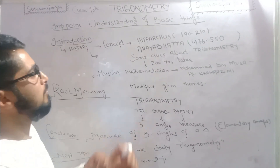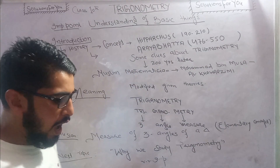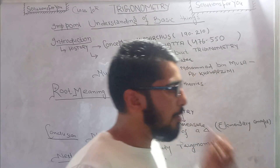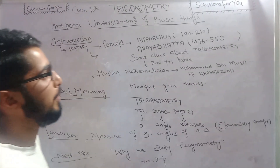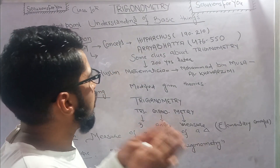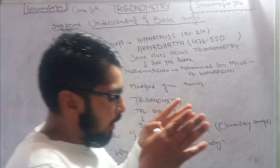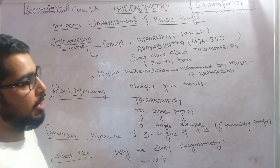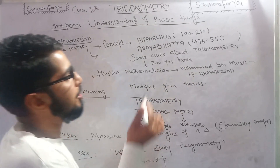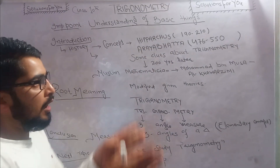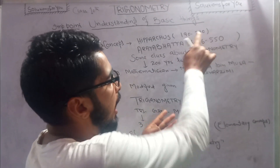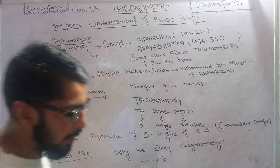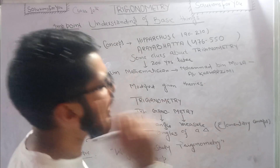If we talk about the history in terms of concept — the history of trigonometry is not very strongly authenticated. But briefly: it is said that the concept of trigonometry was given by a mathematician named Hipparchus, who lived between the period of approximately 190 to 120 BCE. During this period he gave the concept of trigonometry, though this is considered a theory.